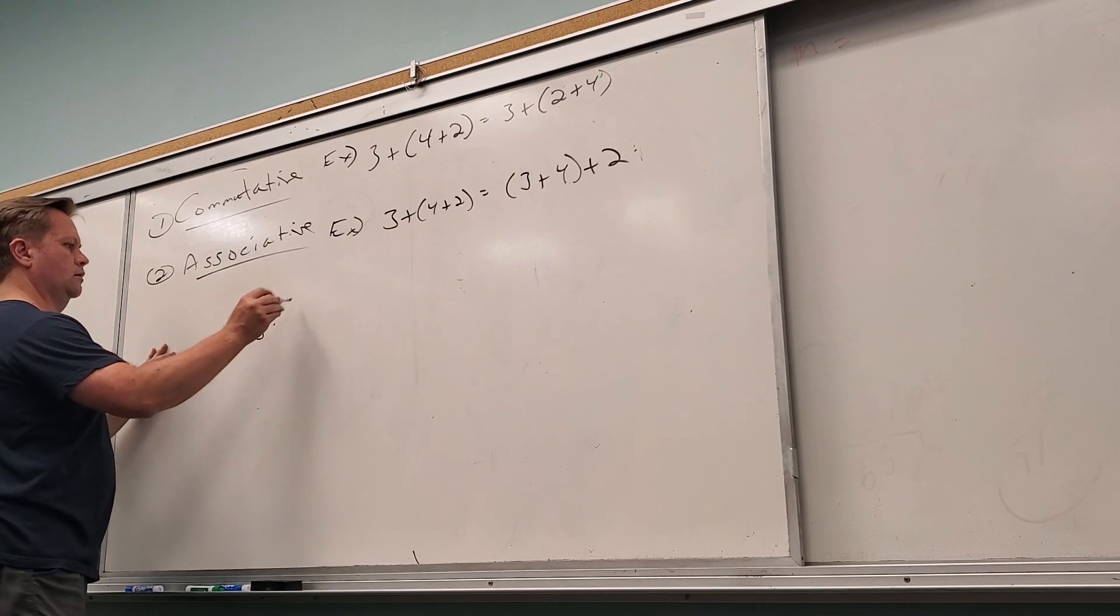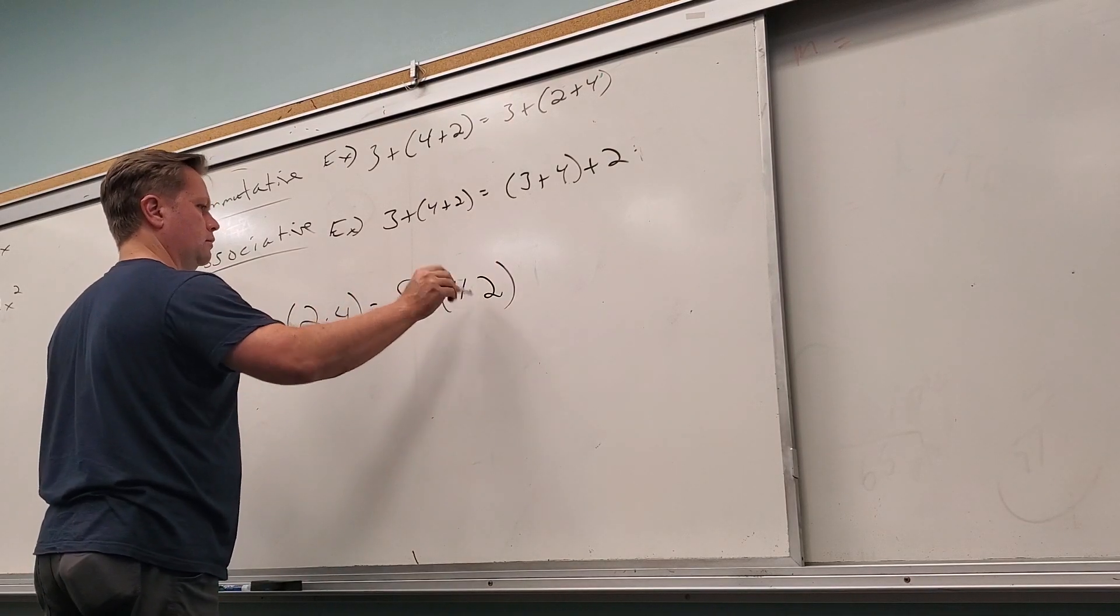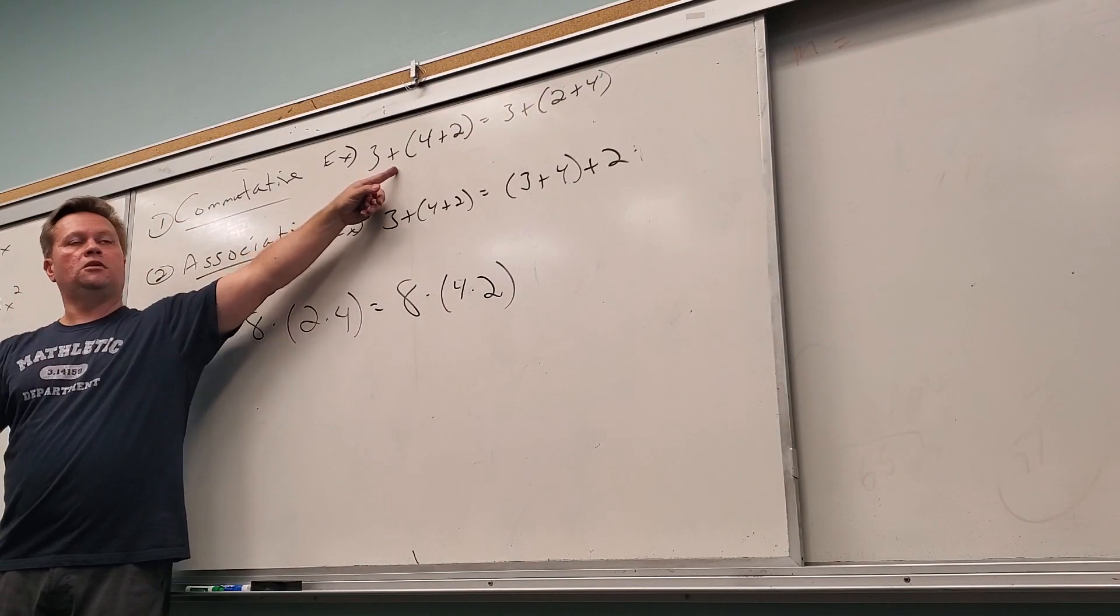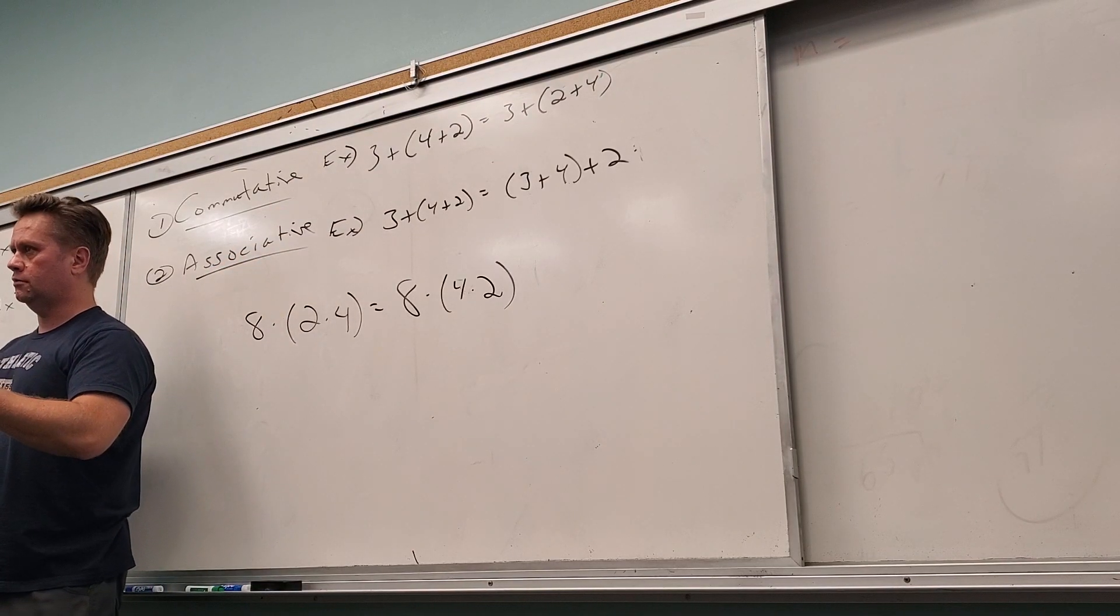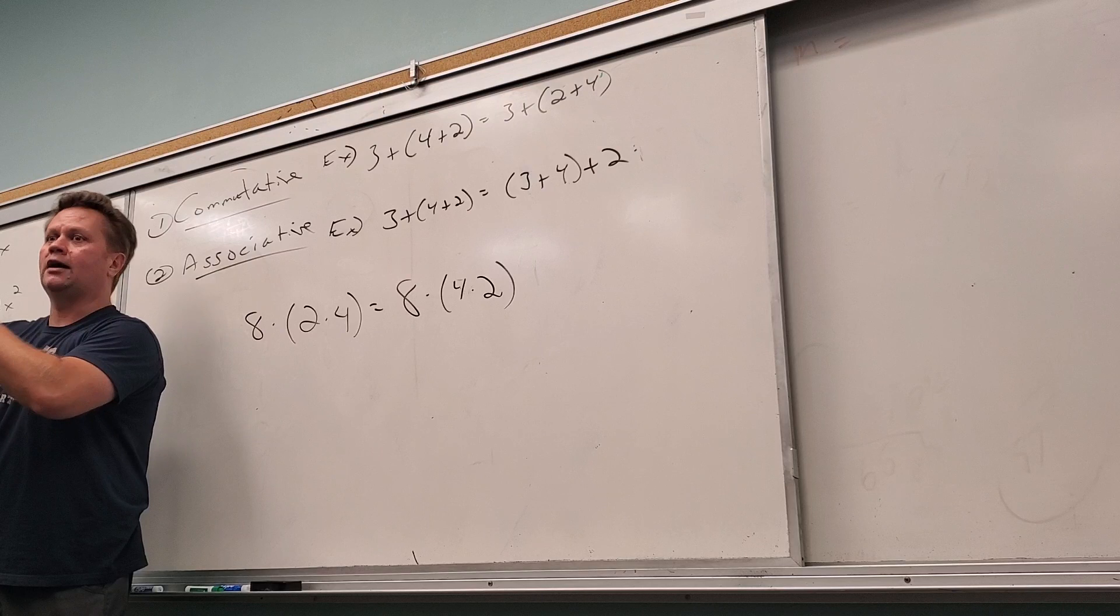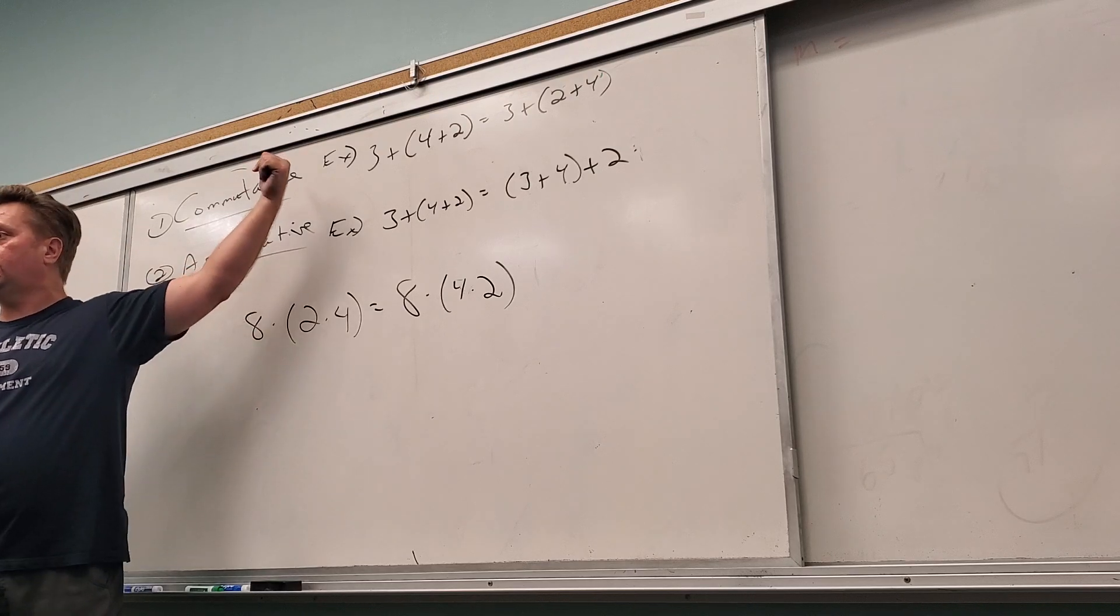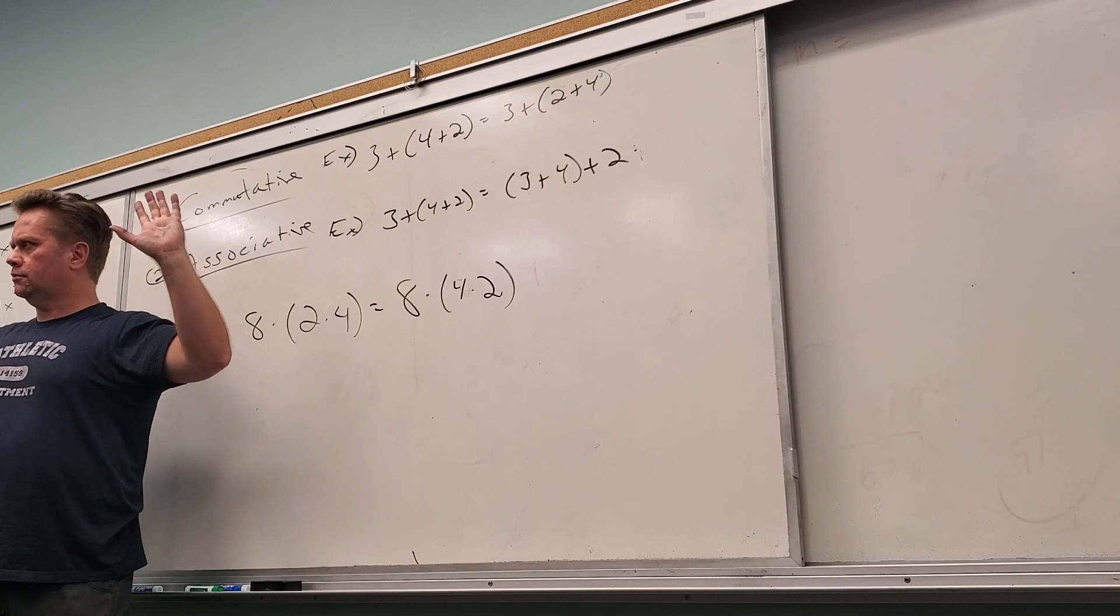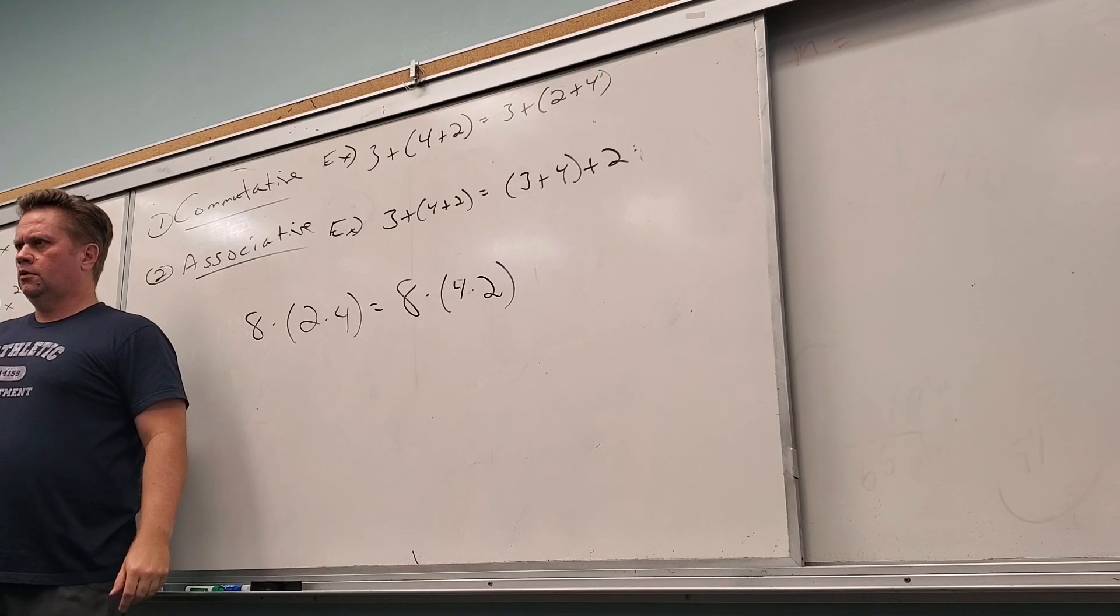So if I saw this, which property is that? Commutative. Yeah. And we can be more precise now - that's commutative of multiplication. This is commutative of addition. Does it work for subtraction? No. Hell no. Because what's four minus two? What's two minus four?